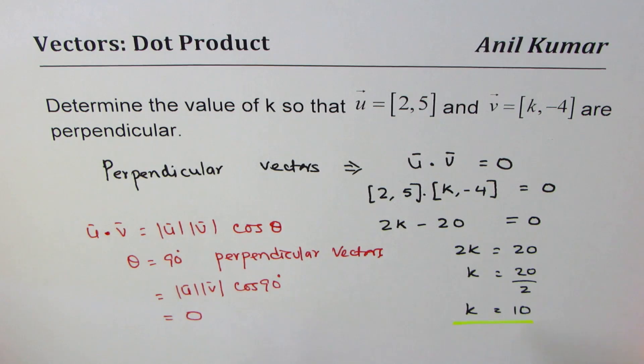So even if u and v are non-zero vectors, their dot product can be 0, provided the angle between them is 90 degrees. So that is the concept which you have used here to find the value of k.